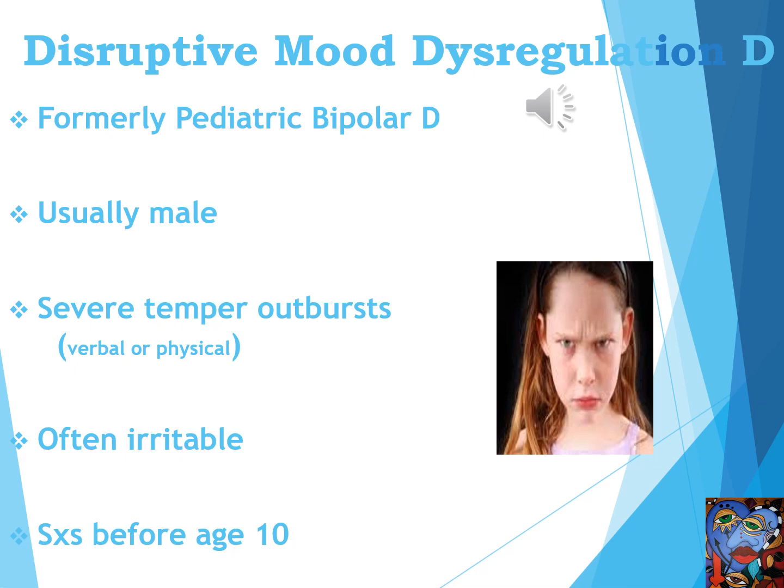Let's now consider a disorder you probably haven't heard of by its new name: disruptive mood dysregulation disorder. It summarizes the inability to regulate moods. It was formerly called pediatric bipolar disorder in the previous DSM, which was an unfortunate term because it lacks the key features of adult bipolar disorder. Individuals are usually male. The child has severe temperament outbursts — verbal and/or physical — is consistently irritable, and symptoms appear before age 10.